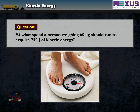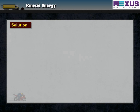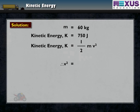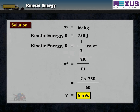Question: At what speed should a person weighing 60 kg run to acquire 750 joules of kinetic energy? Solution: Given mass M = 60 kg, kinetic energy K = 750 joules. We know kinetic energy = ½MV². So, V² = 2K ÷ M = 2 × 750 ÷ 60, which gives V = 5 meters per second.